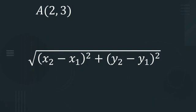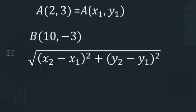In this point which is x1, y1 and x2, y2 we have to find out. A(2,3) is the first point so let it be x1, y1. B(10,-3), let it be x2, y2.